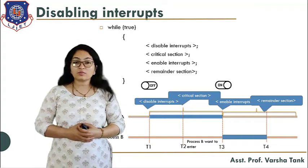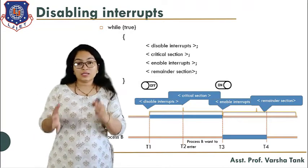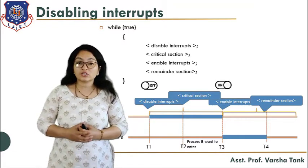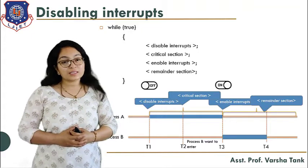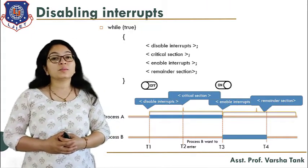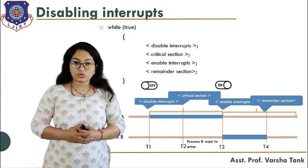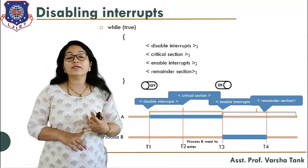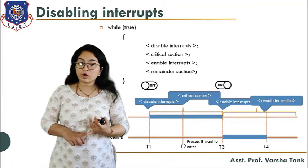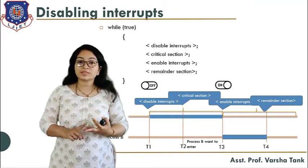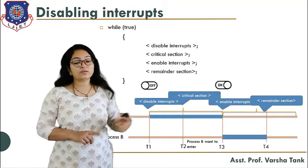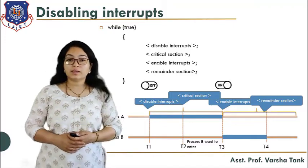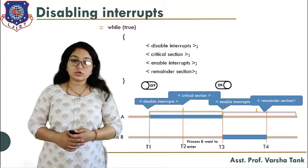The disadvantage of disabling interrupts: if a process disables the interrupt and never re-enables it, no other process will get a chance to access the critical section or do its execution. It will not satisfy all conditions for the critical section problem — mutual exclusion, progress, and bounded wait. It satisfies mutual exclusion but not bounded wait and progress. So let's see another solution.